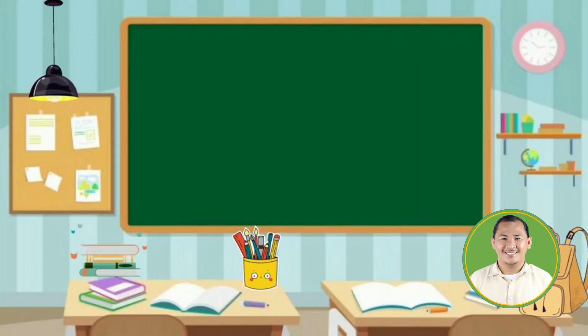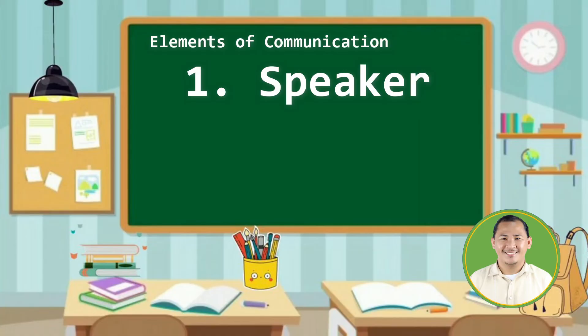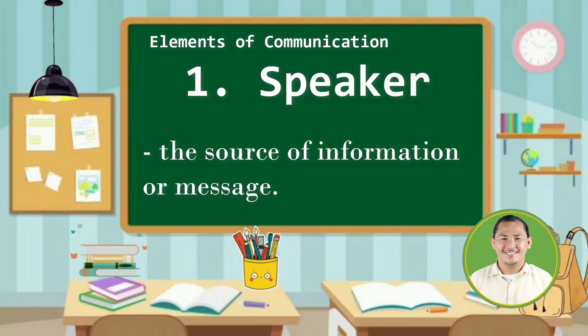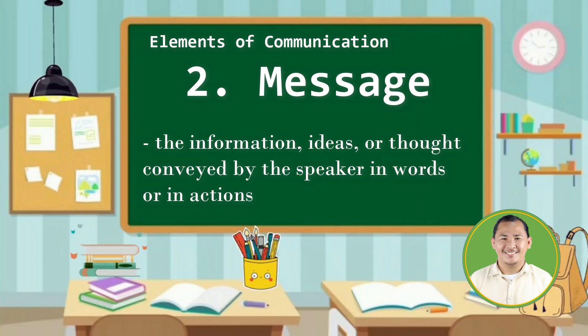I hope you have understood the process of communication. Now let us proceed with the elements of communication. There are nine elements of communication. The first one is the speaker — the source of information or message. Number two, message. This is the information, the ideas, or thought conveyed by the speaker in words or in actions. In short, the message is what we are sending.